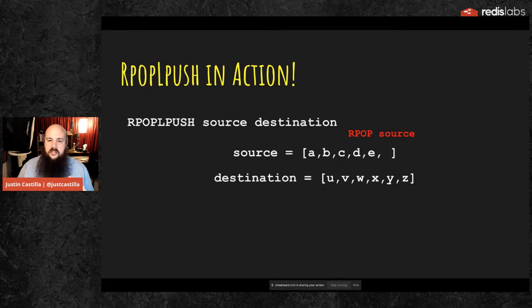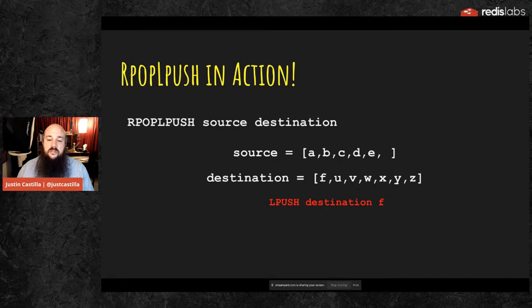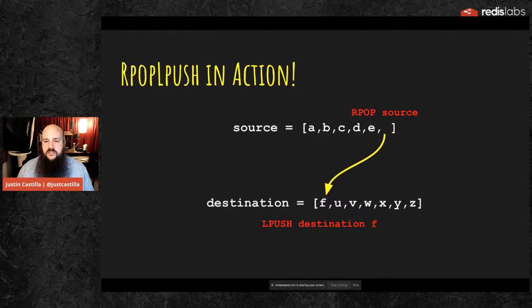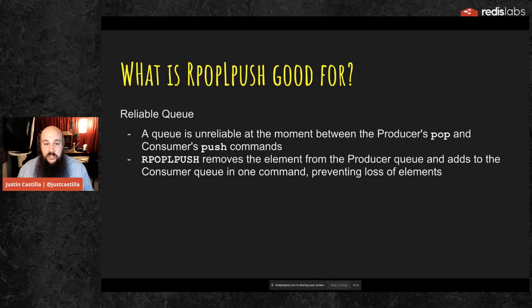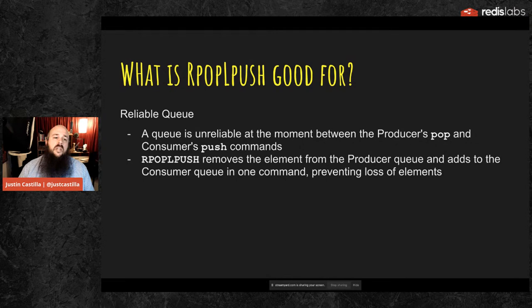RPOPLPUSH again does two things: first, it pops off the last element of the source list, and then pushes that last element from source onto the head of destination. This is one single command, which is usually two separate commands — a pop and a push. This gives you, for visual learners, a clear picture of where the element actually ends up going.